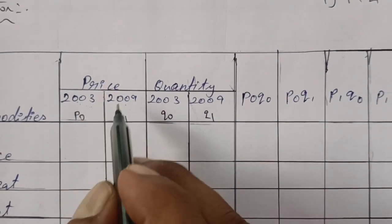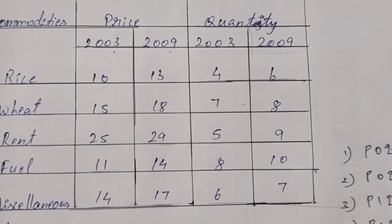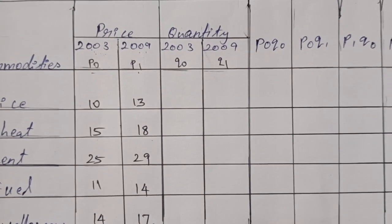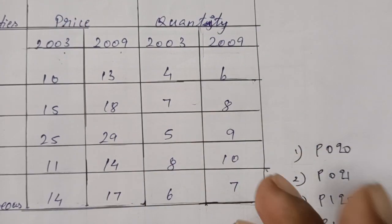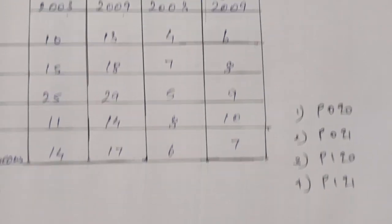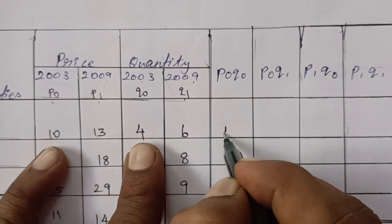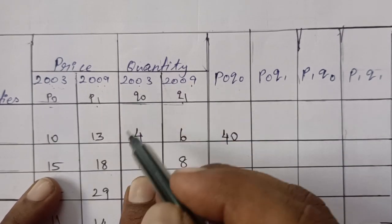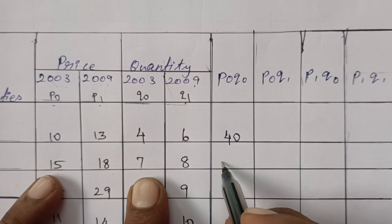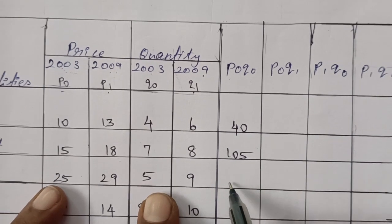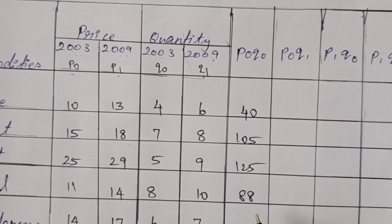Now we find the values. For P0 and Q0: entries are 10×4=0, 15×7, 15×10, 15×8, 18×8, 14×6, giving a total. For P0Q1 column: 10×6=60, 15 gives 120, 25×9, 11×10=110, 14×7=98.